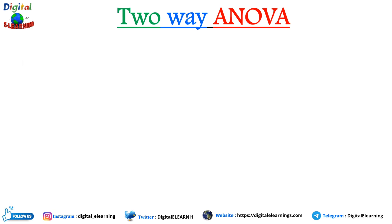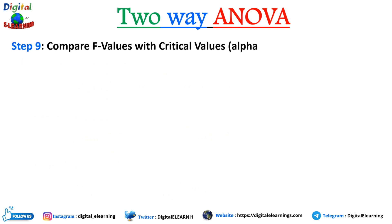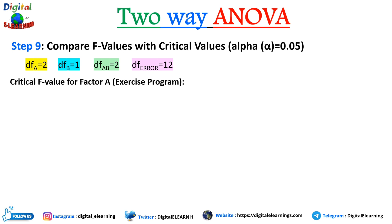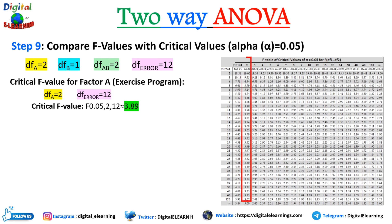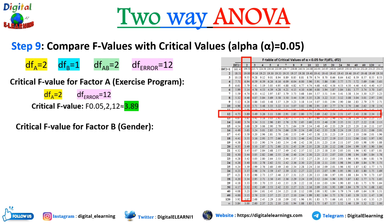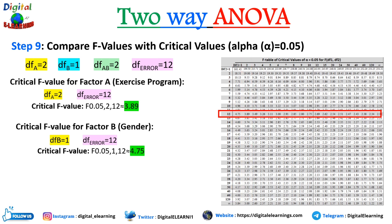Step nine: compare the F-values with the critical values, assuming alpha = 0.05. The degrees of freedom are: factor A = 2, factor B = 1, interaction AB = 2, and error = 12. From the F-table at 0.05 significance level, the critical value for factor A (df 2 and 12) is 3.89. For factor B (df 1 and 12), it is 4.75. For interaction (df 2 and 12), it is also 3.89.